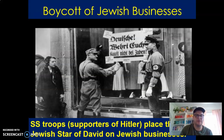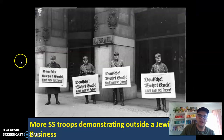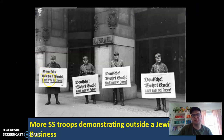Here's an image — you can see SS troops, supporters of Hitler, placing the Jewish Star of David on Jewish businesses. And again, more SS troops demonstrating outside of Jewish businesses, protesting with signs.